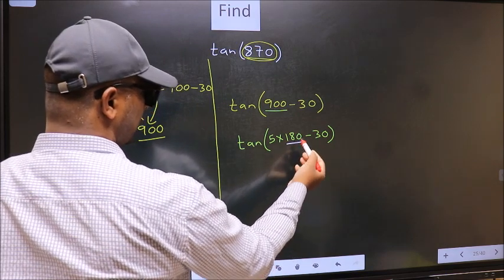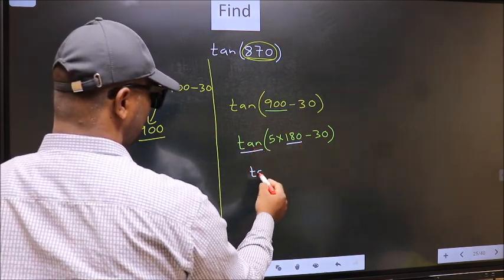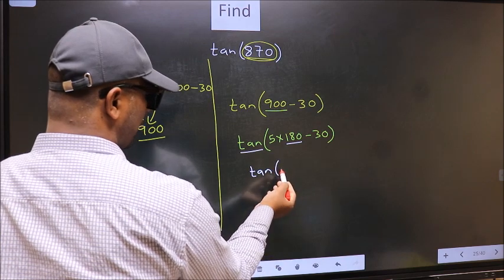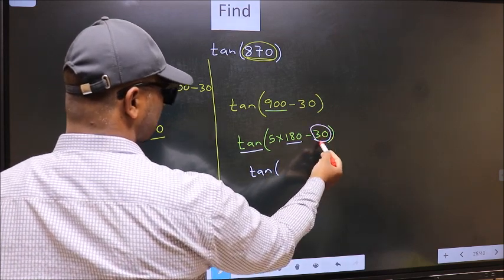Next, here we have 180. So tan is not going to change, it will remain tan. And inside, we get this angle, 30.